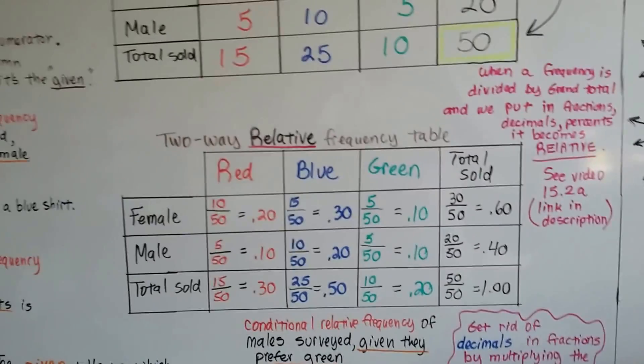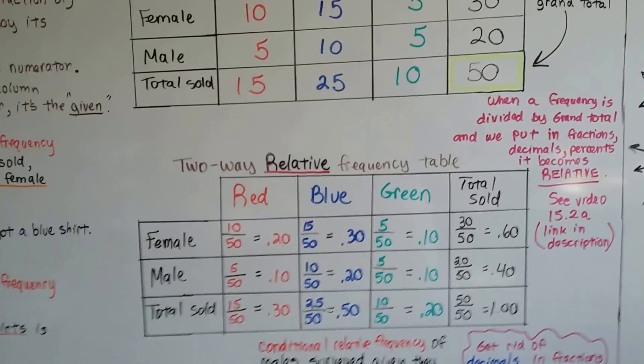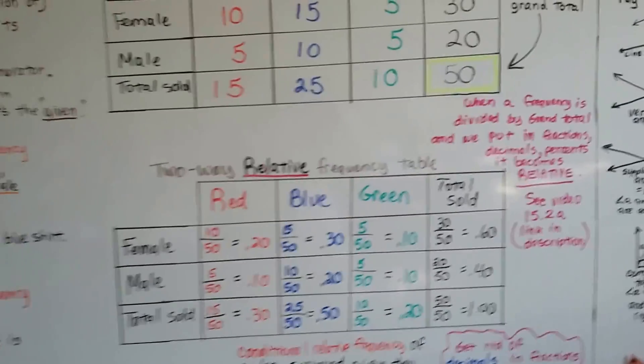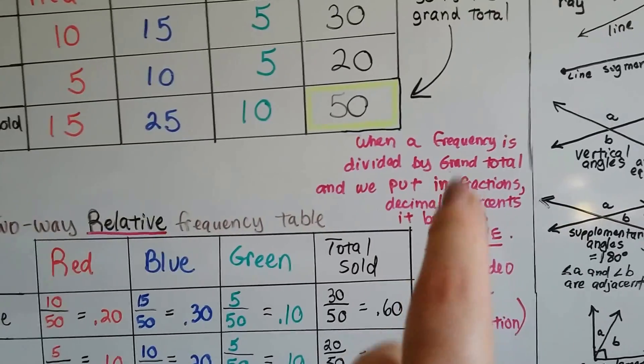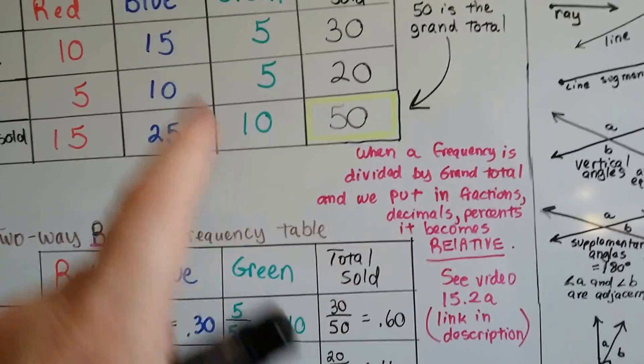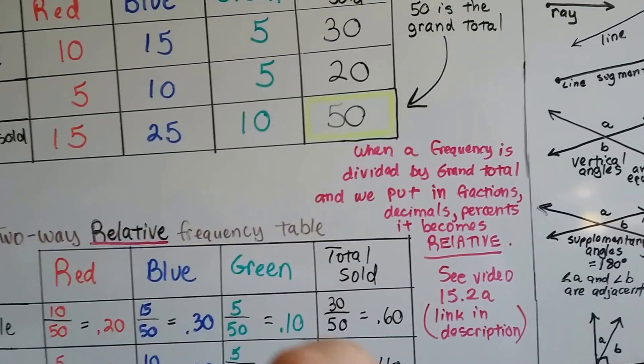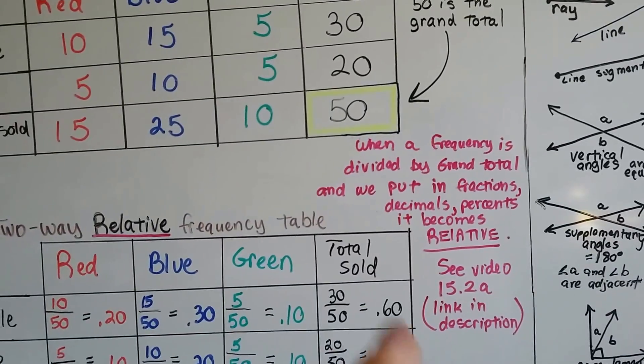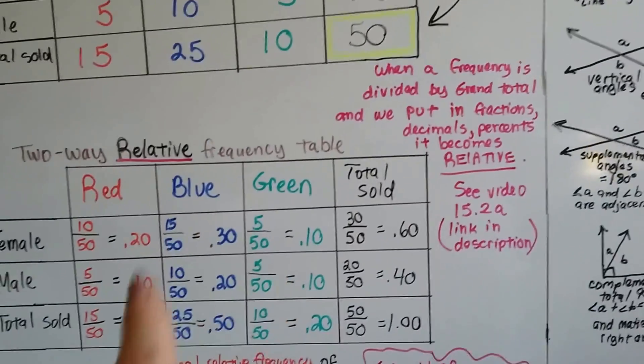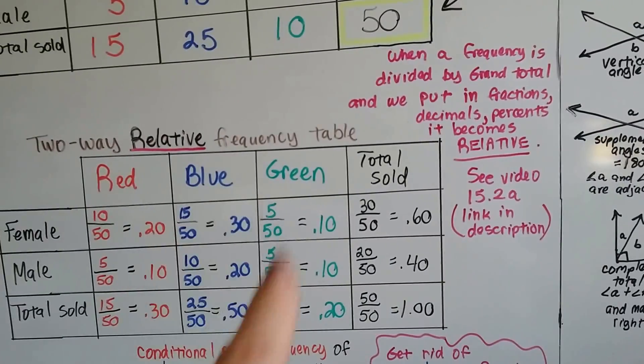Now, if you're really confused and you're like, oh my gosh, what are these two-way frequency tables and two-way relative frequency tables? When a frequency is divided by a grand total, like 15 divided by 50 or 5 divided by 50, and we put it into fractions and decimals, then it becomes a relative frequency table.